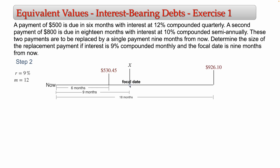For the $530.45 payment, the focal date is three months in the future, so we compute a future value. The value of x at the focal date is simply x — since x is happening on that date, no adjustment is needed for it. For the $926.10 payment, the focal date is before the scheduled date: 18 months minus 9 months equals 9 months back in time, so n equals 9.